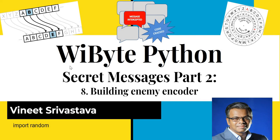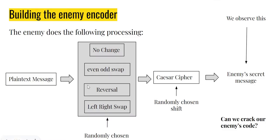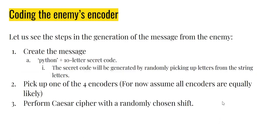Welcome back friends. Let us now build the enemy encoder. We have seen the enemy using all the technology we've developed — even-odd swap, reversal, and so on — doing something quite sophisticated by using randomness. So we are going to build that enemy encoder right now. Let's first see the structure of the enemy encoder once again.